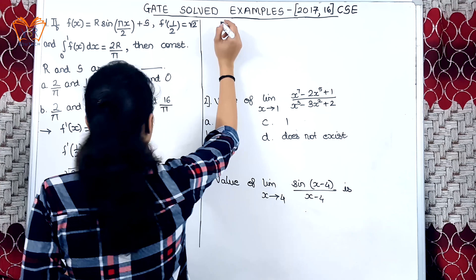Moving on to the next example: the value of limit x→1 of (x⁷ − 2x⁵ + 1) / (x³ − 3x² + 2). If we directly substitute x = 1, the numerator gives 1 − 2 + 1 = 0 and the denominator gives 1 − 3 + 2 = 0. So this becomes 0/0, and we apply L'Hôpital's rule.